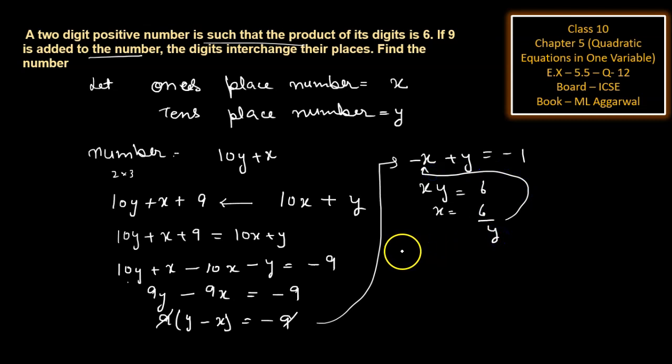Now substitute in this. So we will get minus 6 upon y plus y is equal to minus 1. So it can be written as minus 6 plus y squared is equal to minus y. So it is a quadratic equation.